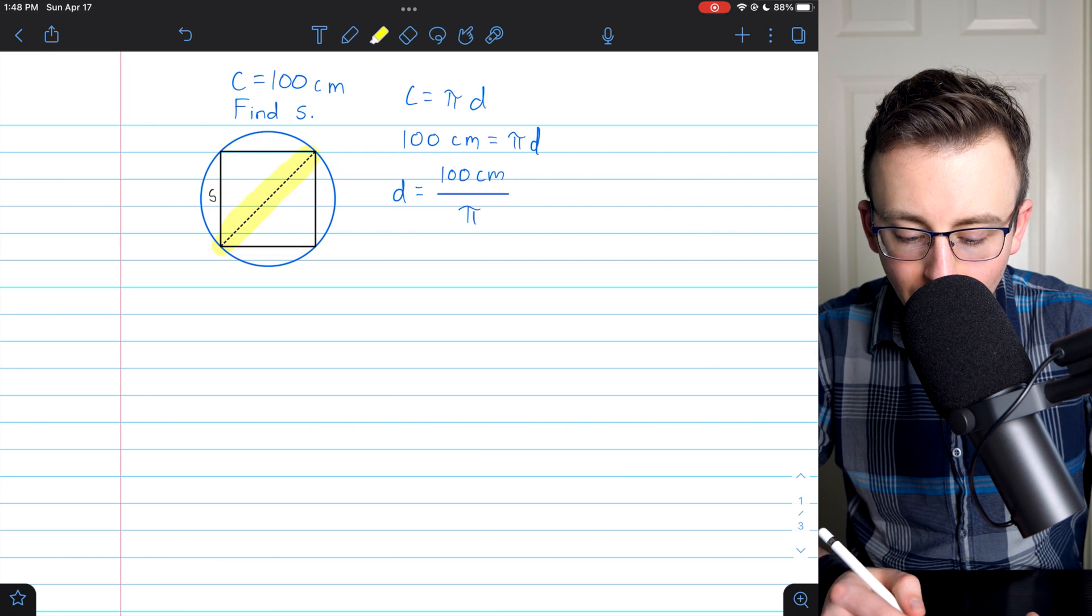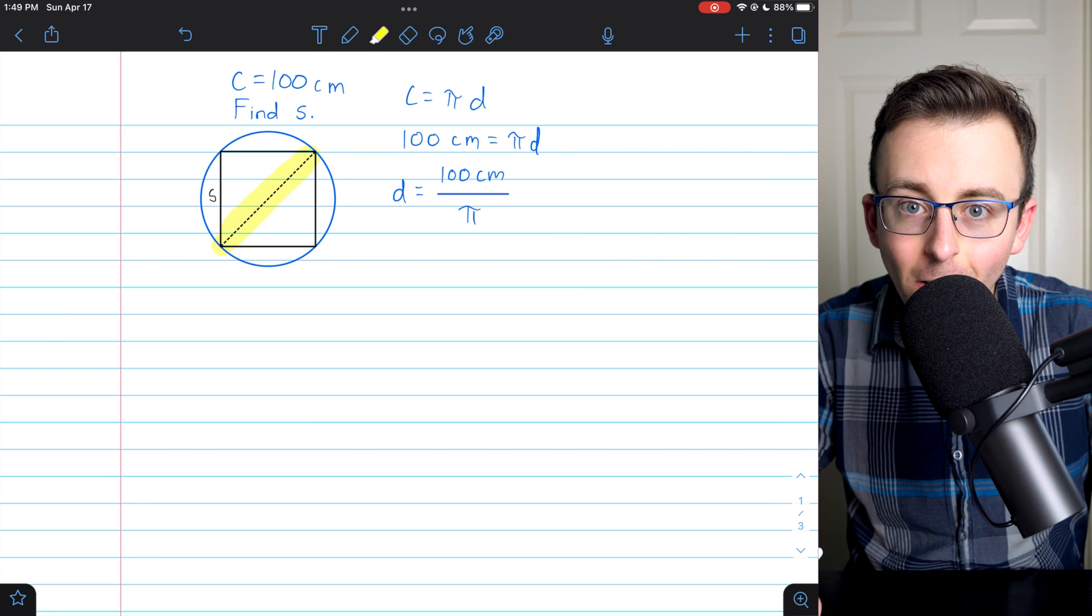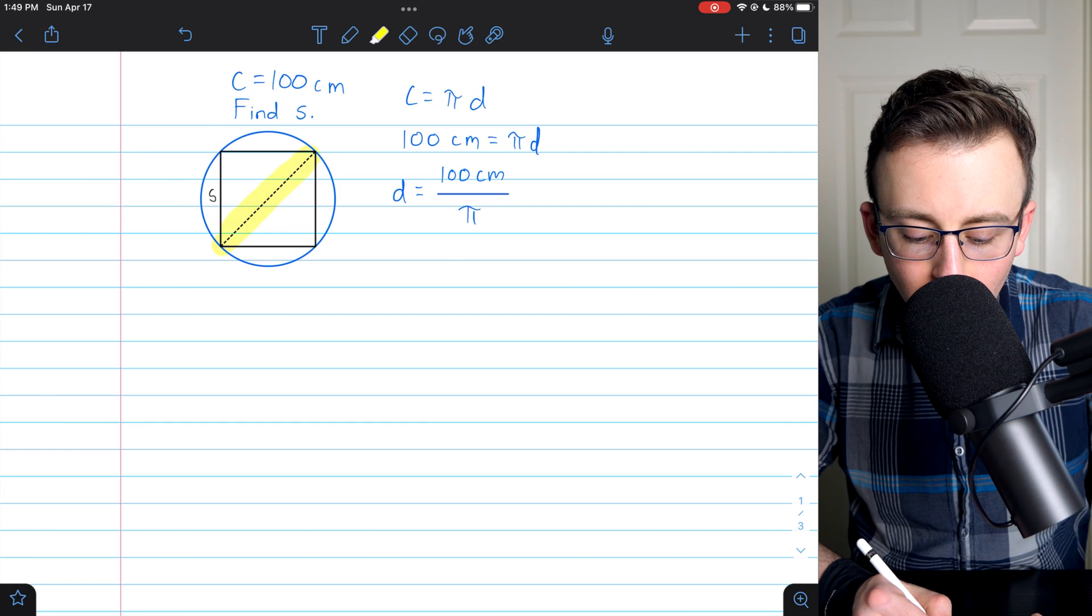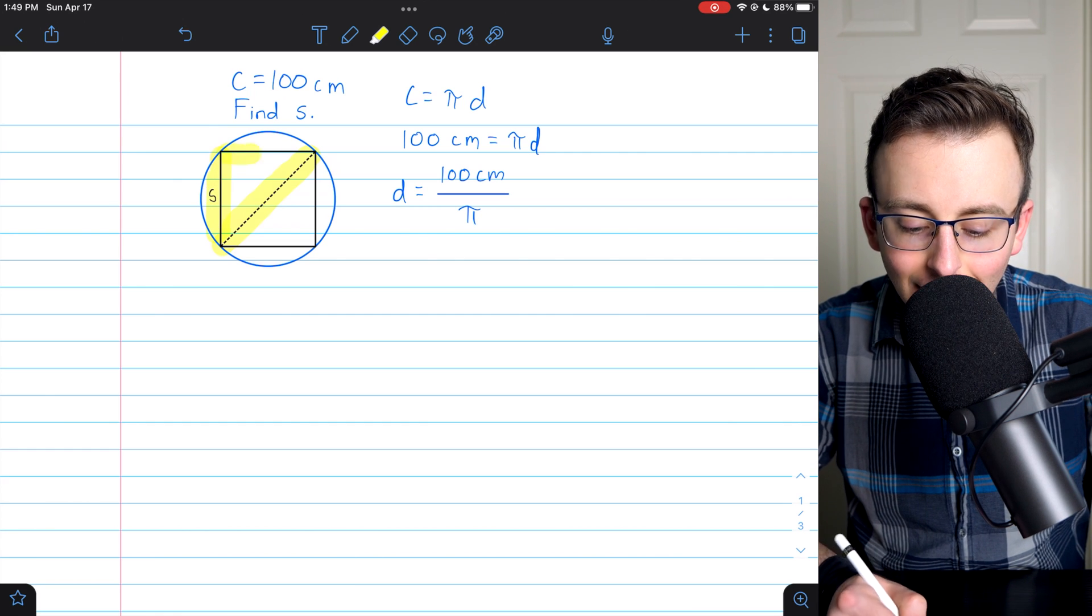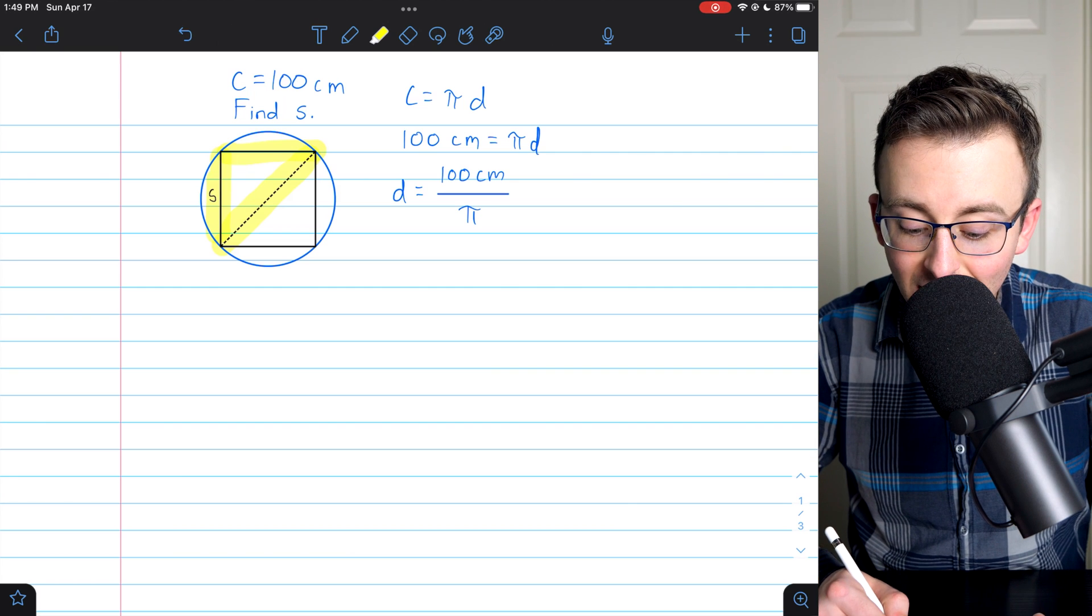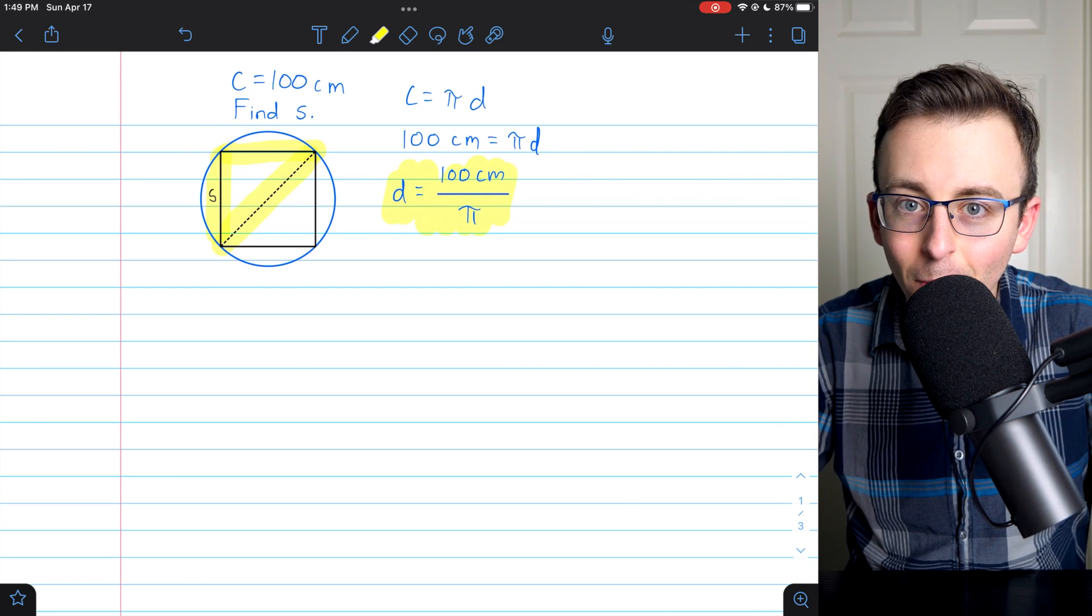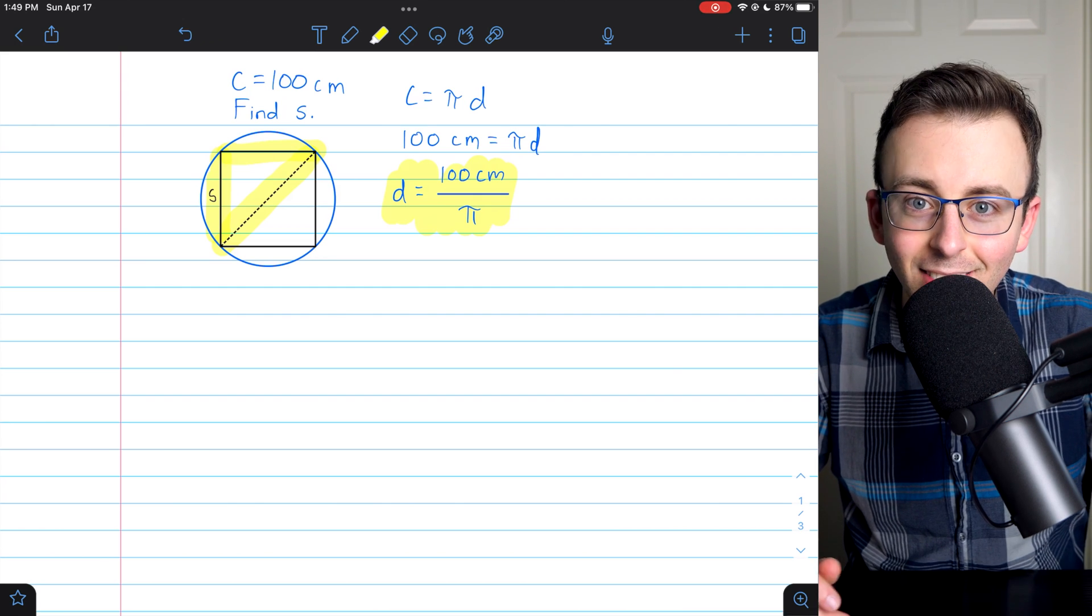the diameter of the circle is the same as a diagonal of the square. So all we have to do is relate s, the side lengths of the square, to the diagonal. And then since we know the diagonal, because it is also the diameter, we'll be able to solve for the side length.